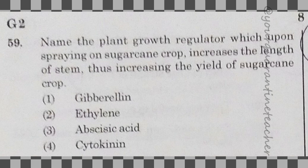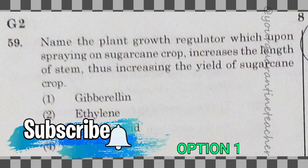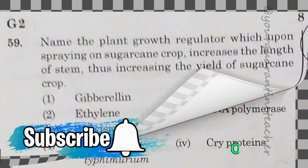59th question: name the plant growth regulator which, upon spraying on sugar cane crop, increases the length of the stem, thus increasing the yield of the sugar cane crop. This is a direct question from NCERT. The answer is option 1 — gibberellin.